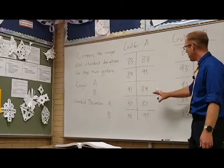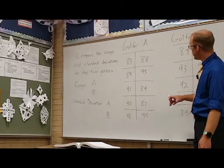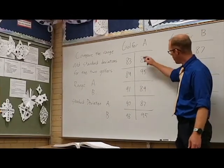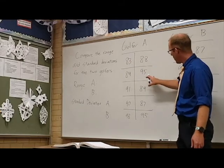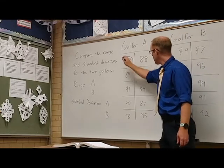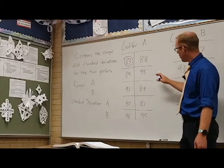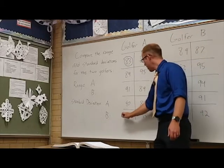In order to find the range I need to find the largest and smallest numbers from each of these. As we scan through here, it looks like 83 is our smallest number and our largest number is 98.